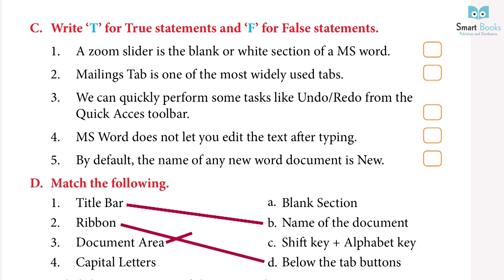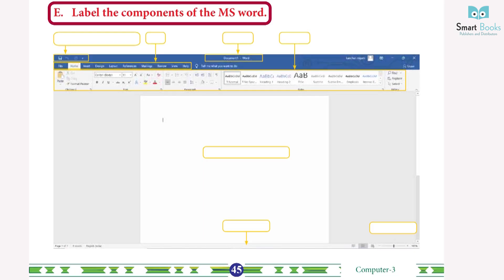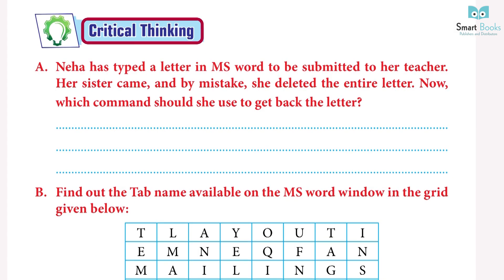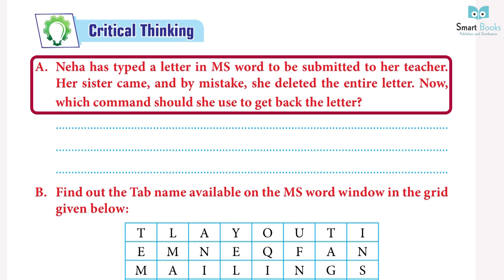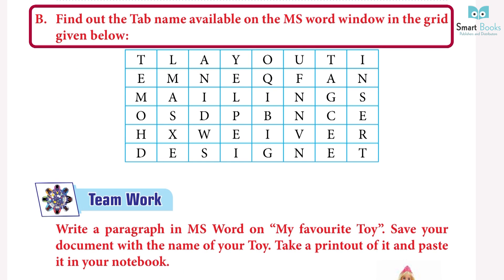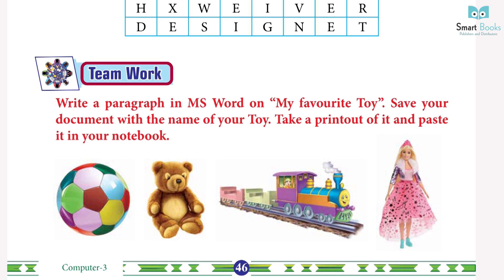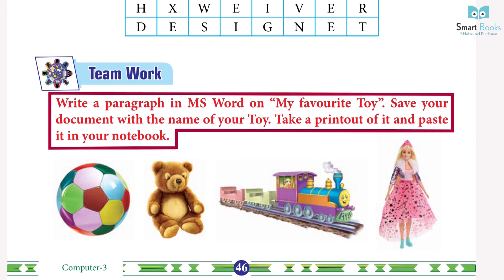Match the following: title bar — B; ribbon — D; document area — A; capital letter — C. Label the components of MS Word — do it yourself. Critical thinking: Nia typed a letter in MS Word to submit to her teacher. Her sister accidentally deleted the entire letter. Which command should she use to get it back? Do it yourself. Find out the tab names available on the MS Word window in the grid: Layout, Insert, Design, Home.